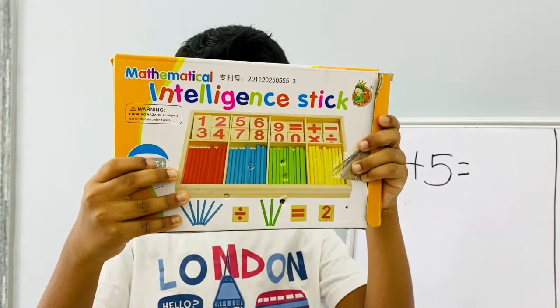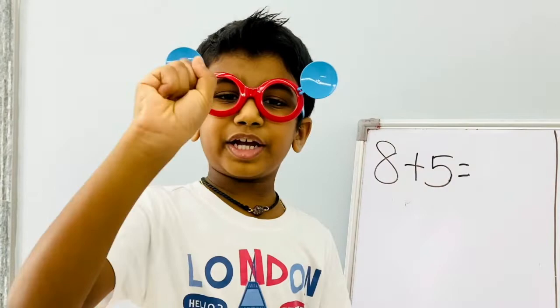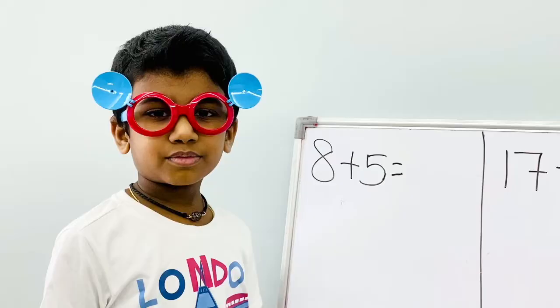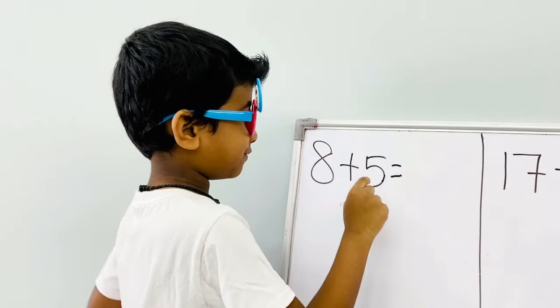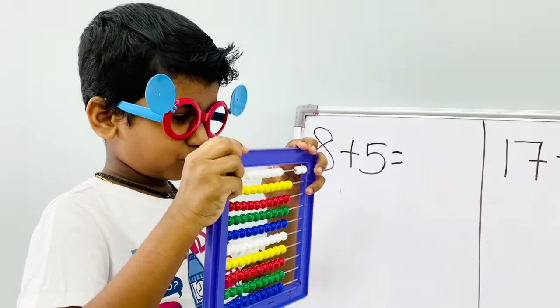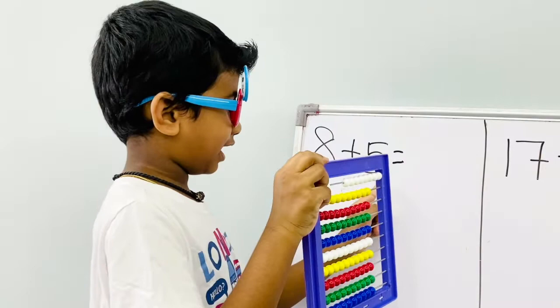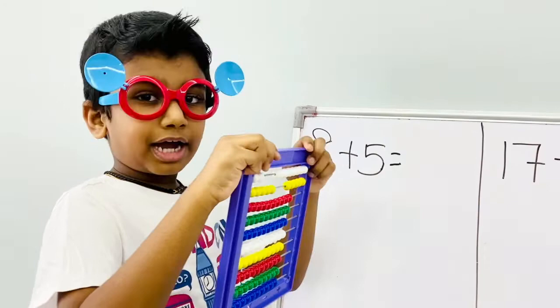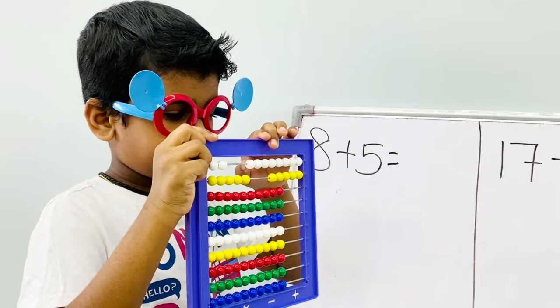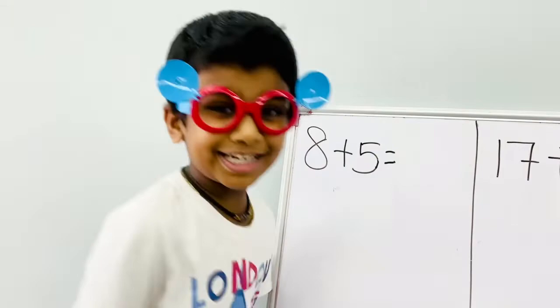Okay friends, 8 plus 5 equals to. I have to take 8: 1, 2, 3, 4, 5, 6, 7, 8. Then I have to take 5: 1, 2, 3, 4, 5. Then I have to count: 1, 2, 3, 4, 5, 6, 7, 8, 9, 10, 11, 12, 13. So the answer is 13.